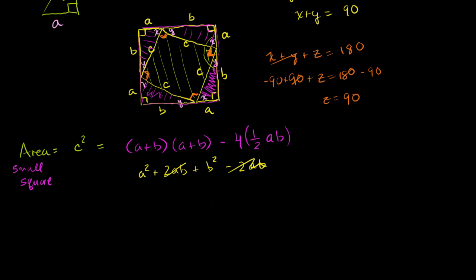Well these cancel out. 2AB minus 2AB. We're just left with A squared and B squared. So the area of this inside square, which is C squared, is also equal to A squared plus B squared.